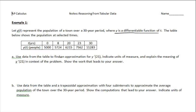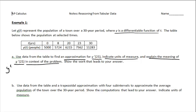Use data from the table to find an approximation — always slow down when you see that word. We need to find an approximation for Y prime of 21, indicate the units of measure, and explain the meaning of Y prime of 21 in context. Show the work that leads to your answer; they're willing to give you points for showing the setup. Y prime of 21 is the slope of Y at time 21.